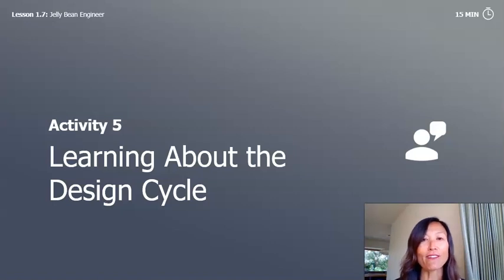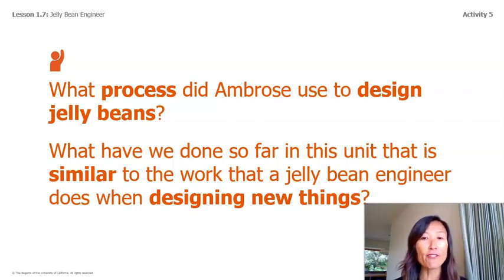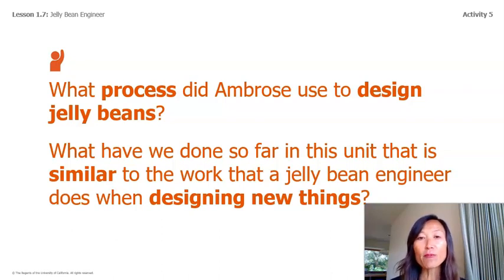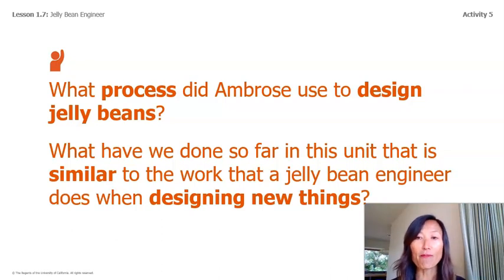Activity 5: Learning about the design cycle. What process did Ambrose use to design jelly beans? He studied for many years, worked with a team to design new flavors, tested a lot of different ingredients, and mixed ingredients together to find the right flavor and texture. Sometimes the jelly bean flavors didn't turn out as expected, but he had to try again. Similarly, we have observed different glues, learned about properties of glue, and tested ingredients to see which ones would make the best glue.